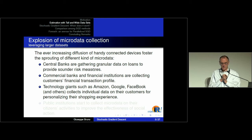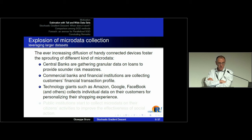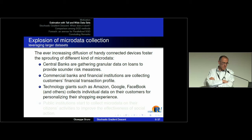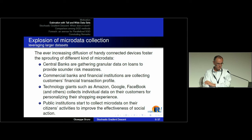The diffusion of many connected devices fosters the sprouting of different kinds of microdata — data that comes from individual persons or firms. Central banks are already gathering granular data on loans to provide standard risk measures. Commercial banks and other financial institutions collect customer financial data to make suggestions. Technology giants already have huge amounts of data on their customers to provide a personalized shopping experience, and public institutions are collecting microdata to improve the effectiveness of social action.